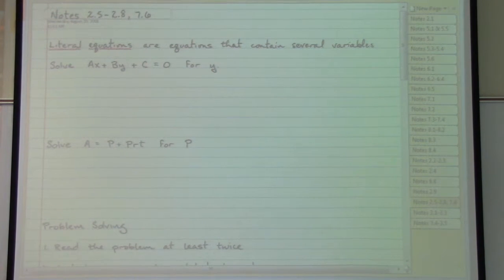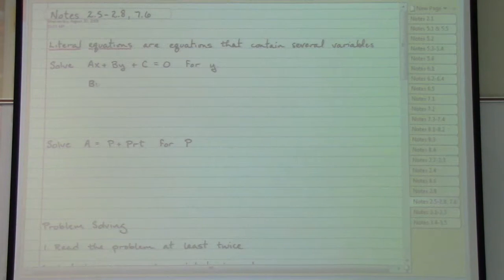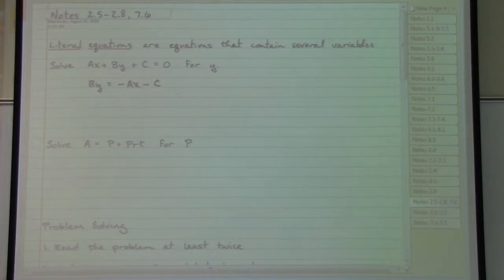In order to move those, we've seen in the past that that would be a situation of subtracting the AX and then also subtracting the C. That leaves me only with needing to move the B letter, which is officially connected through multiplication, and the opposite of multiplying is dividing. So the most direct answer that we can create would be we need to take the negative AX minus C and put that all over top of the B.